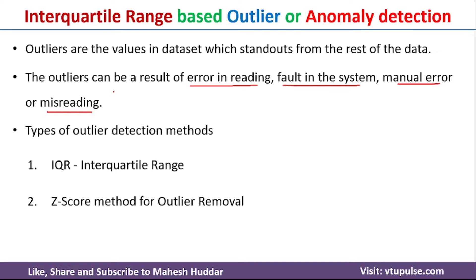There are many methods to detect outliers in a given dataset. The two popular methods for detecting and removing outliers are: first, IQR — that is interquartile range based outlier detection and removal; and second, Z-score based outlier detection and removal. In this video I will discuss the IQR based method. In the next video I will discuss the Z-score based method.